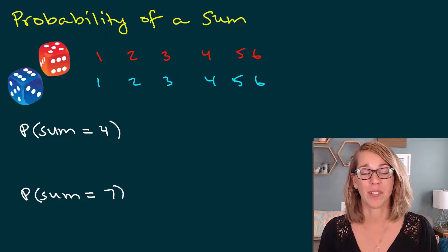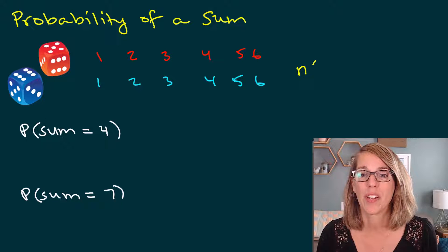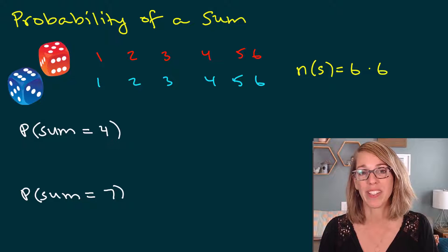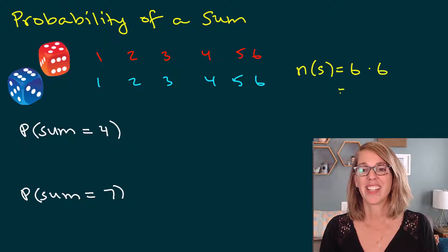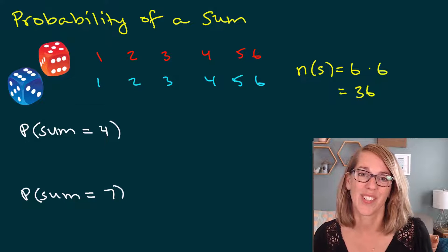I also need the number in my sample space. This is the total possible outcomes. So the number in my sample space, I've got six for the first dice, six possibilities for the second dice, six times six is 36. Now let's get into our sums.